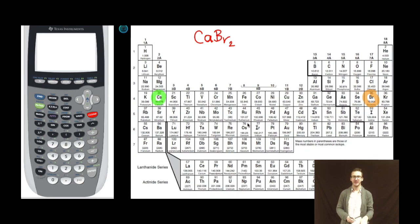I'm just gonna use my calculator. I'm gonna put the mass of calcium one time and I'm gonna add that to, in parentheses, the total mass of bromine.